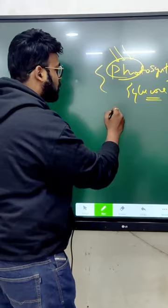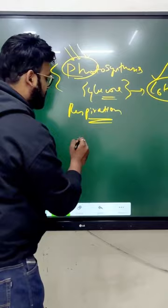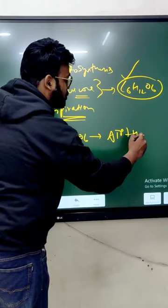If we talk about respiration, respiration is something where we actually break this glucose in order to obtain ATP plus H2O plus carbon dioxide.